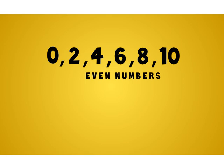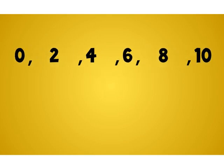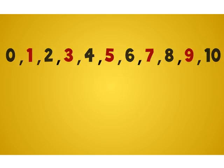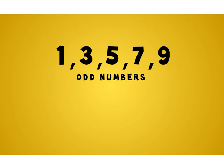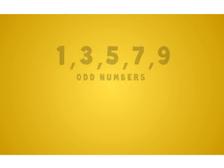The other set of numbers which, when divided into pairs, give a left over or remainder are called odd numbers. 1, 3, 5, 7, and 9 are odd numbers.